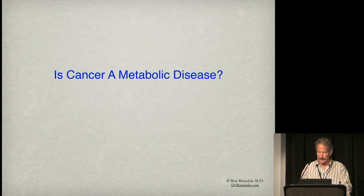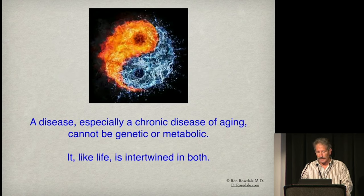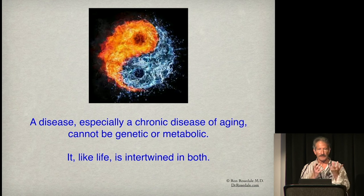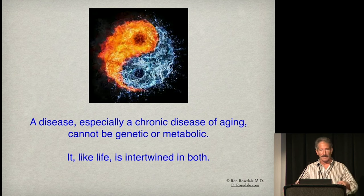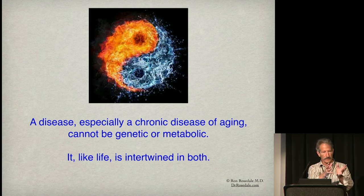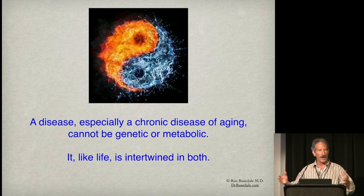Is cancer a metabolic disease? A chronic disease of aging like cancer cannot be purely genetic or purely metabolic — to me that's a silly argument. If you look at the origin of life, genetics and metabolism came together: the genes do nothing, they have to be read. Genes make proteins; those proteins regulate metabolic pathways, which in turn control genetic expression. You can't have one or the other — they're always intertwined, just like life.